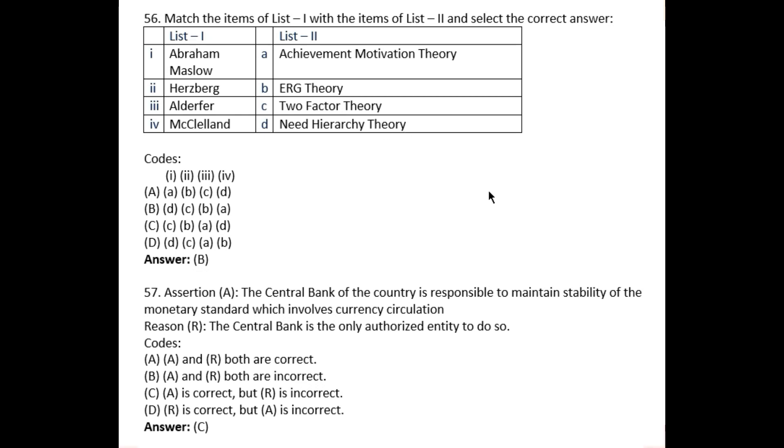Match the items of list one with the items of list two and select the correct answer. In list one, four names are given, and their theories are given in list two. You have to match Abraham Maslow, so everybody needs that the right option will be...